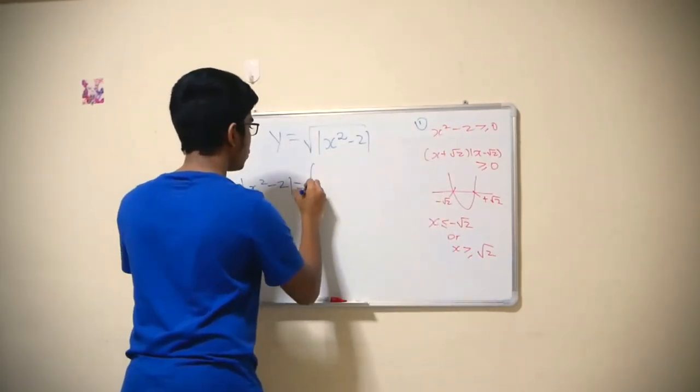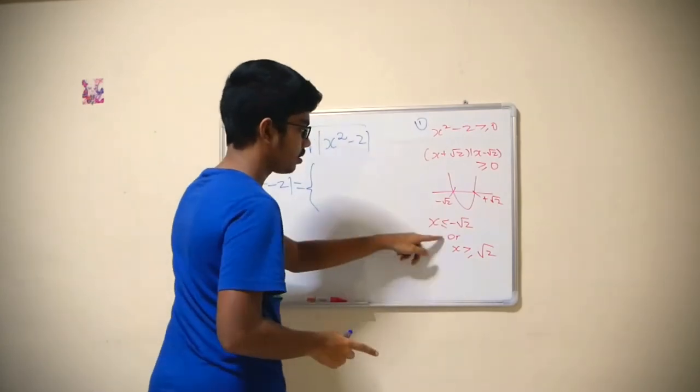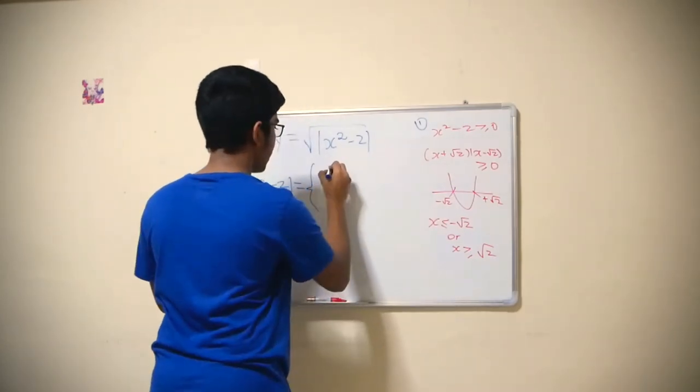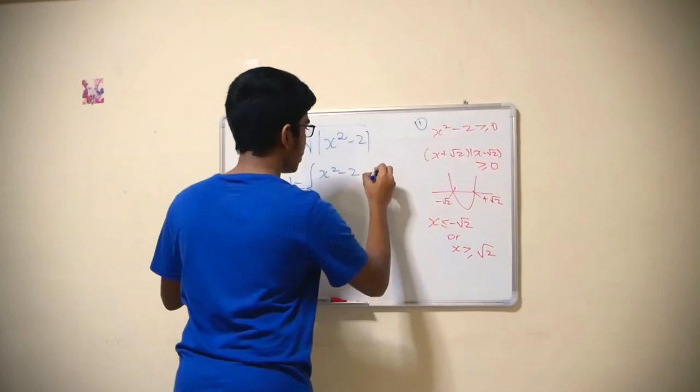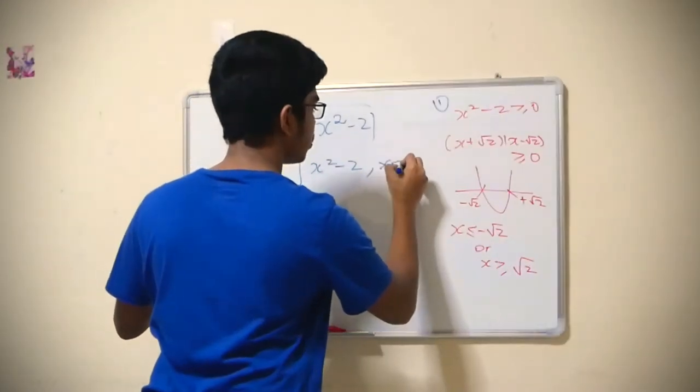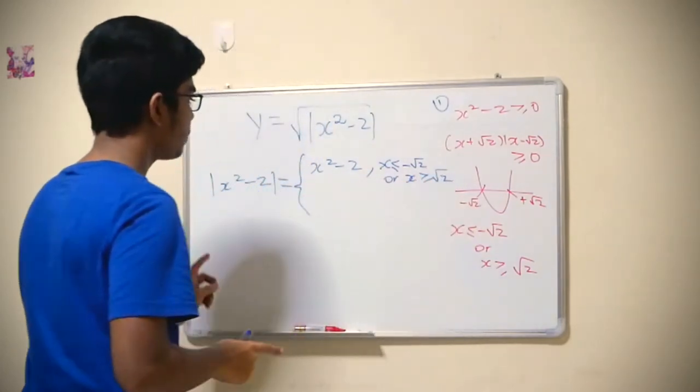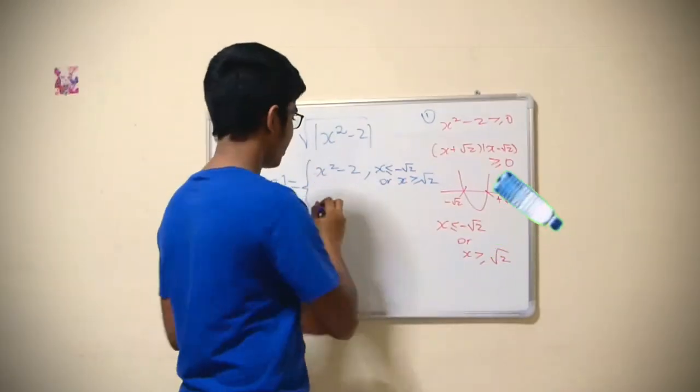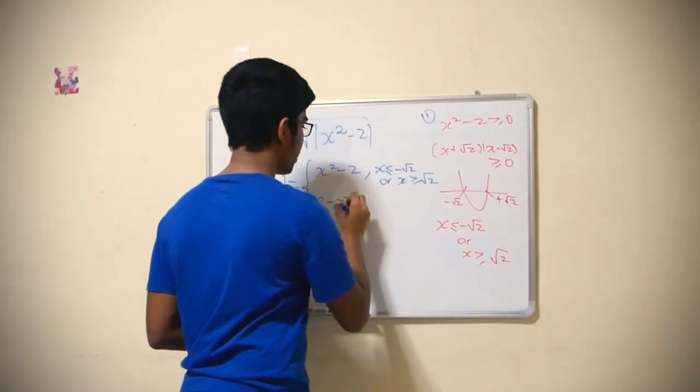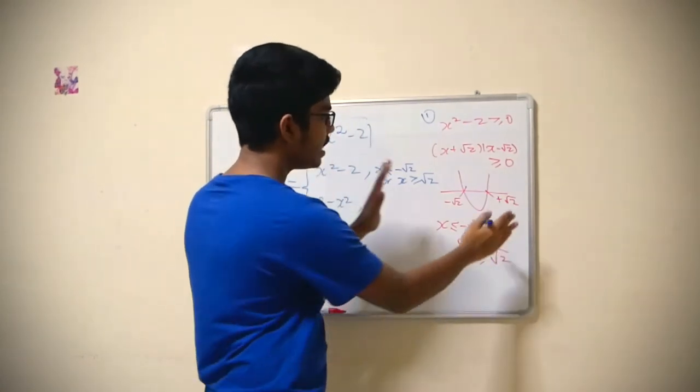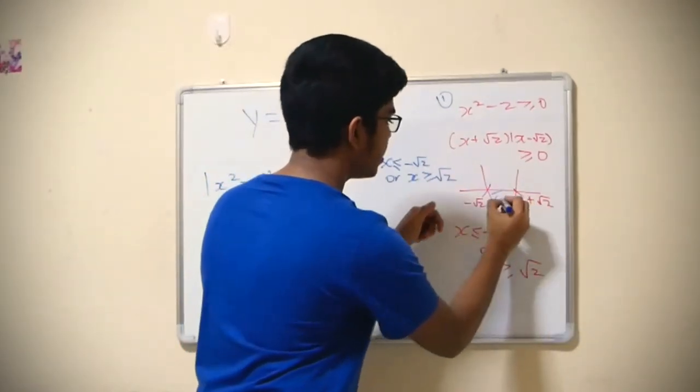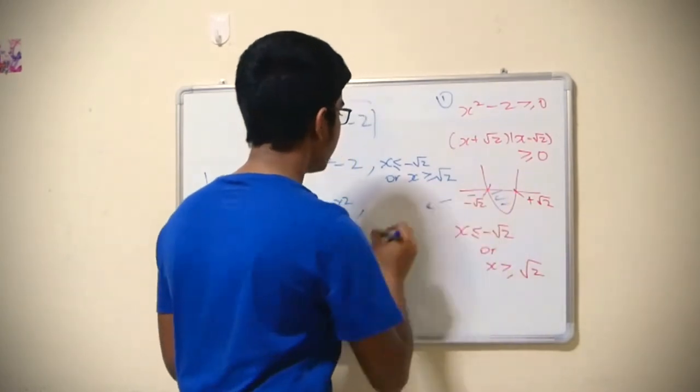x is smaller than or equal to minus root 2 or x is greater than or equal to root 2. Now flip it. In this case, it will be in between—2 minus x squared for minus root 2 less than or equal to x less than or equal to root 2. Now the thing you should be really careful about: